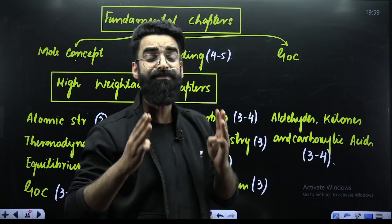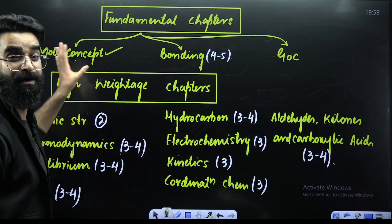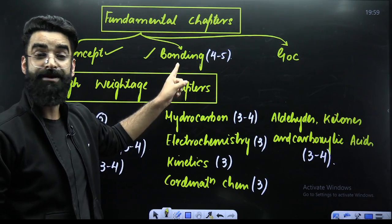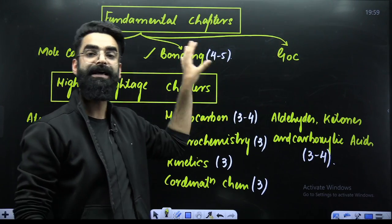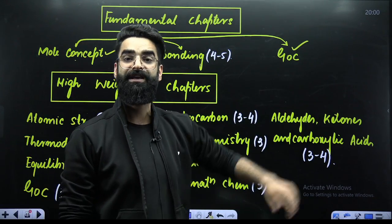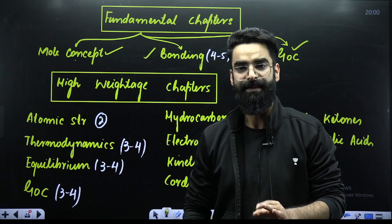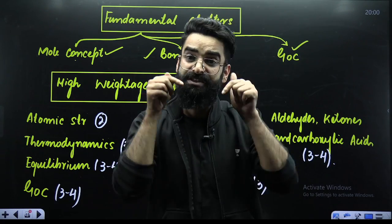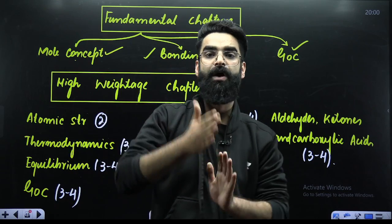The three fundamental chapters of Chemistry which you need to cover at the earliest: first, the Mole Concept — the fundamental chapter of Physical Chemistry. Without this chapter, your Physical Chemistry can never be strong. Second, Chemical Bonding — you cannot start Organic Chemistry without clearing Chemical Bonding. If you want your Organic Chemistry to be strong, your Chemical Bonding has to be very, very strong. Third, General Organic Chemistry — you cannot jump into Class 12th Organic Chemistry without doing GOC first. These are the three fundamental chapters you must prioritize.